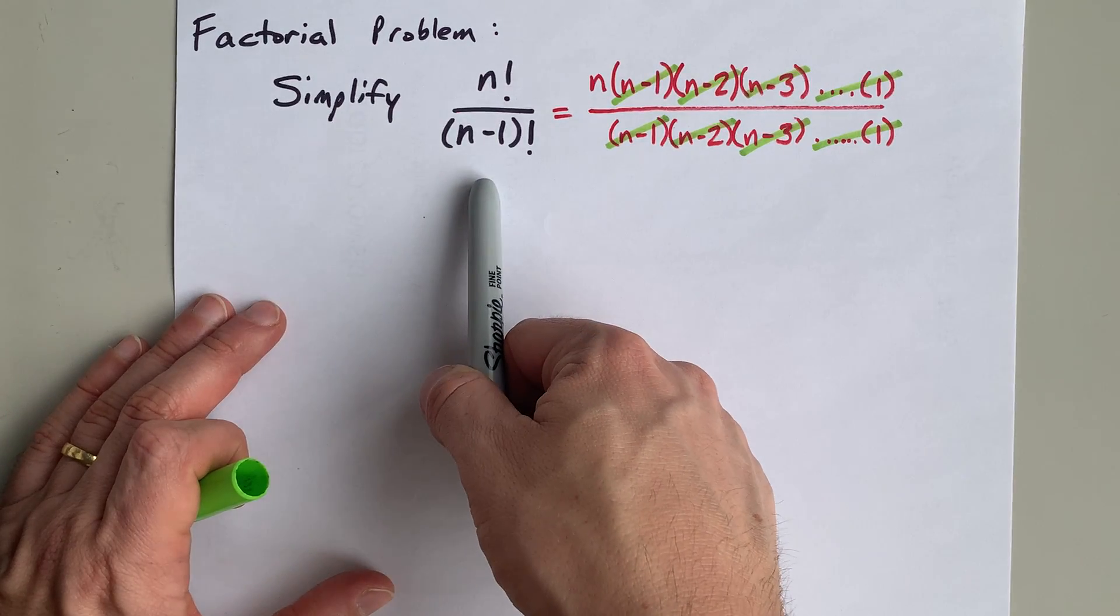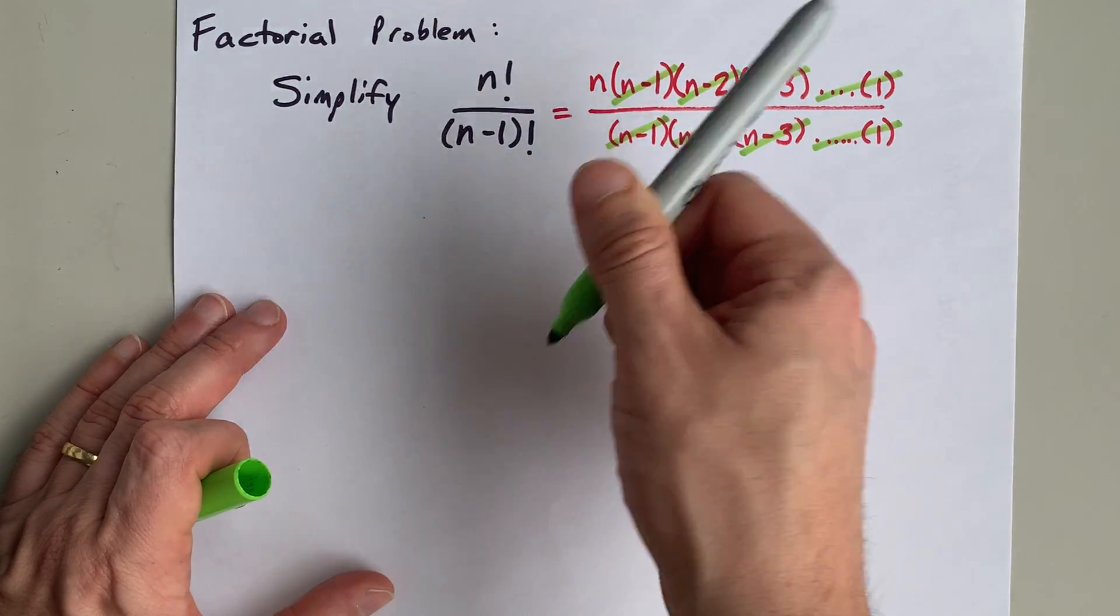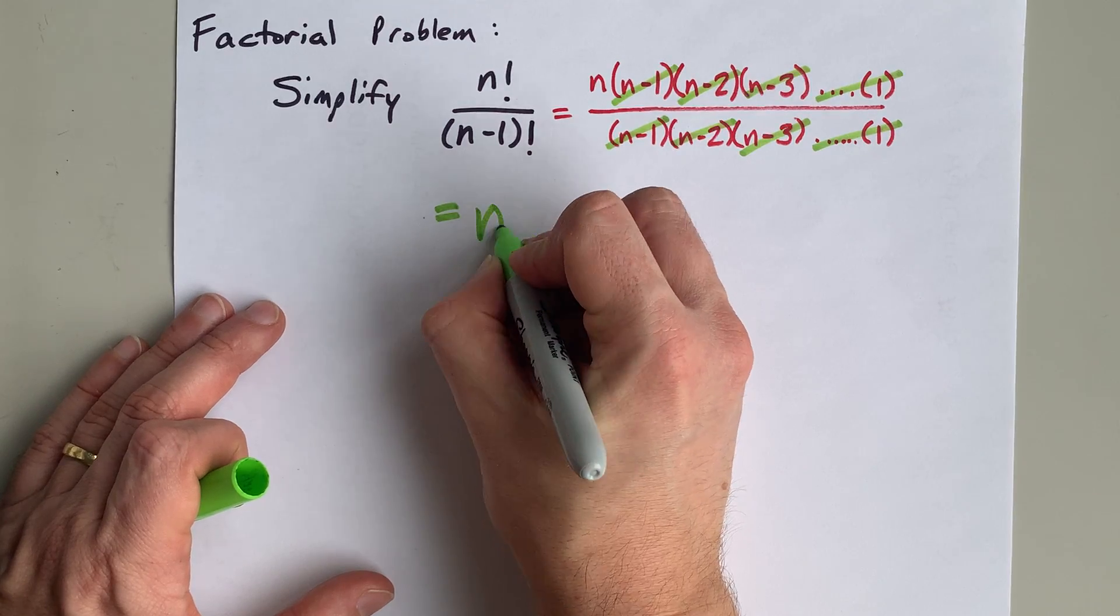So, this factorial, n factorial over n minus 1 factorial, simplifies to just n.